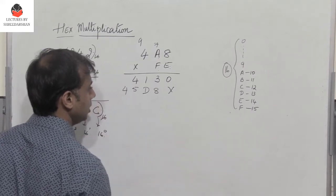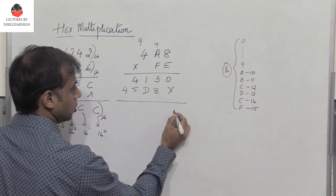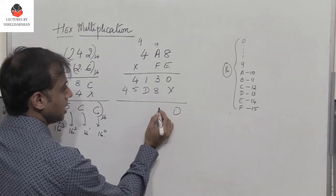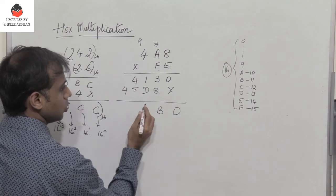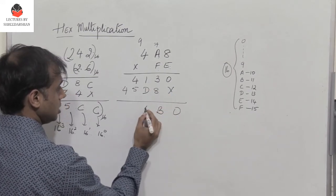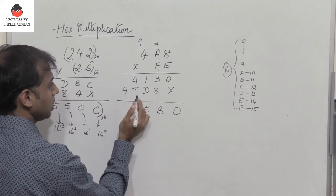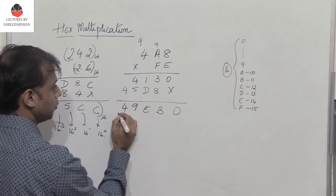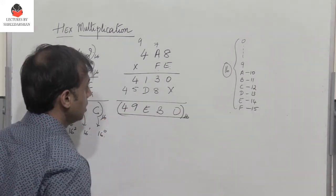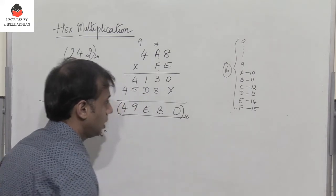So now we need to add the numbers. So 0, 8 plus 3 is 11 which is B. D plus 1 is 14 which is E. And then you have 5 plus 4 is 9 and then 4. So 4, 9, E, B, 0 is the answer. So this is how we perform hex multiplication.